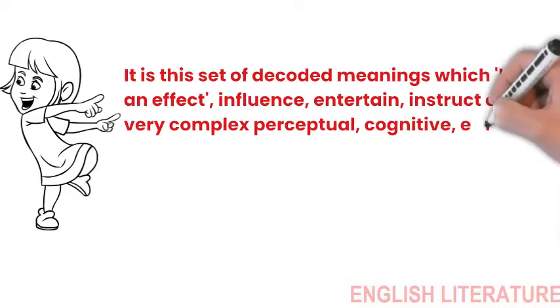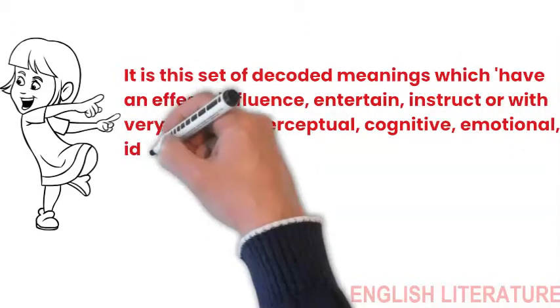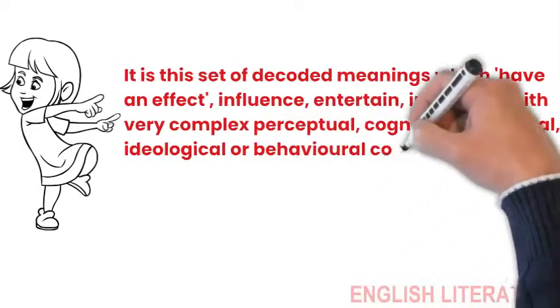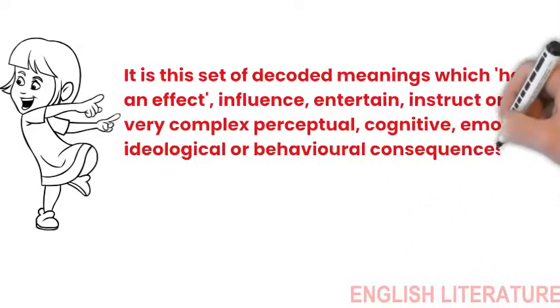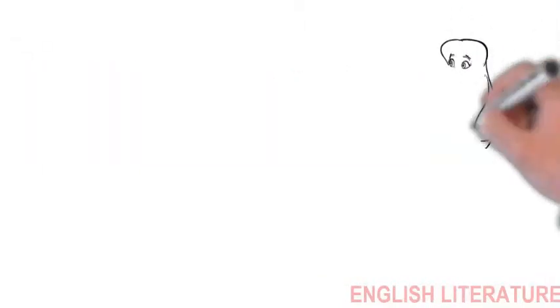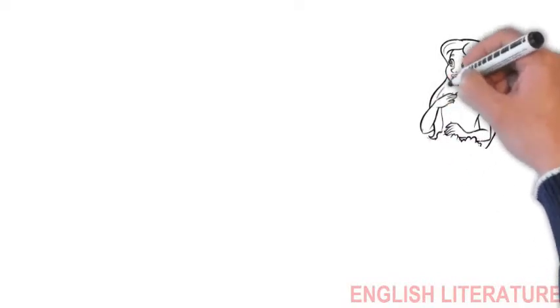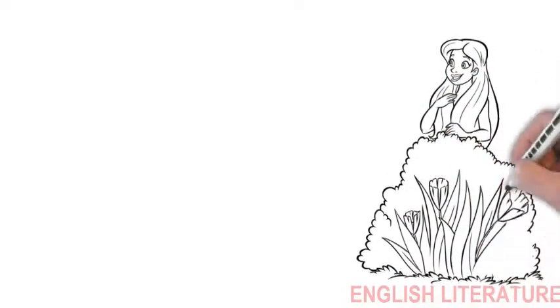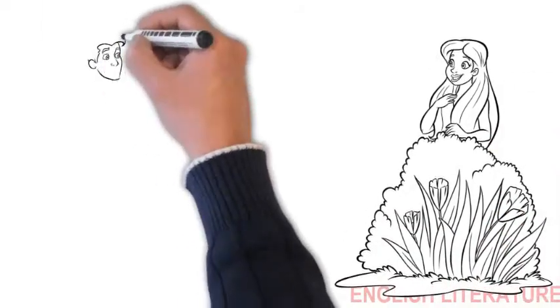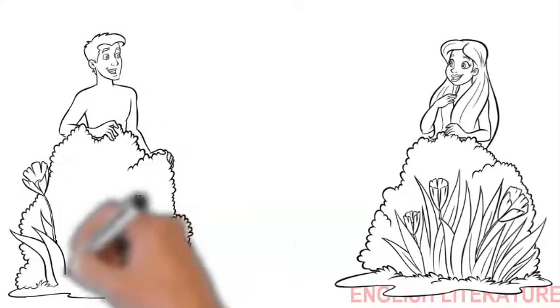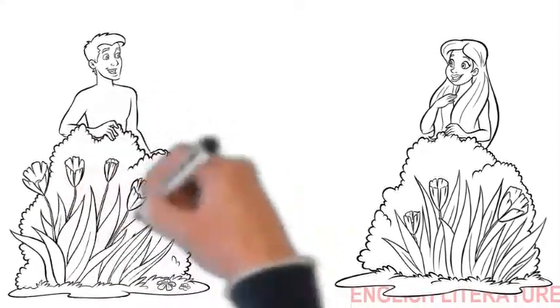It is this set of decoded meanings which have an effect, with very complex perceptual, cognitive, emotional, ideological or behavioral consequences. In a determinate moment, the power relations encode a message. At another determinate moment, the message, via its decodings, comes into social practice and acquires social use value or political effectivity.